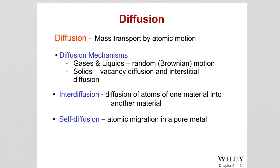Interdiffusion is the diffusion of atoms of one material into another. Self-diffusion is atomic migration in a pure metal — basically all atoms exchanging positions are of the same type. The process by which atoms of one metal diffuse into another is called interdiffusion.